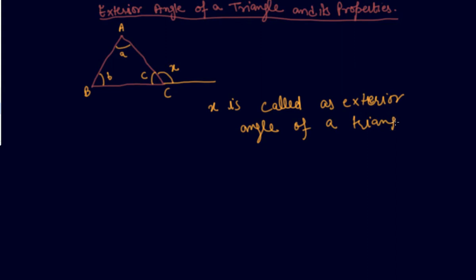I will prove here a property based on the exterior angle of a triangle. You have no need to learn the proof of the property — directly the questions will be asked to you to find answers based on the property which I will be proving here. So, to prove: X is equal to A plus B.